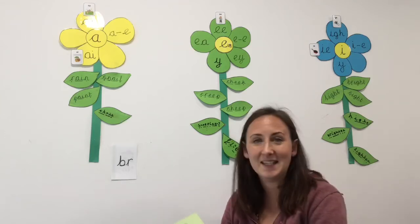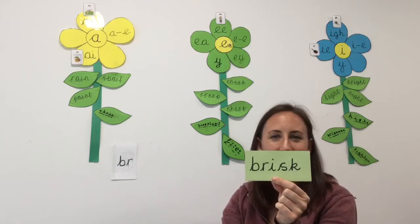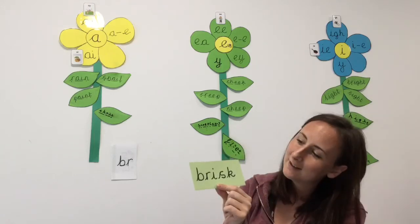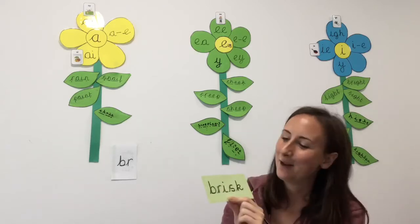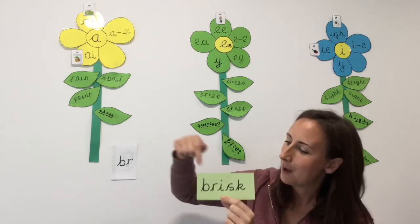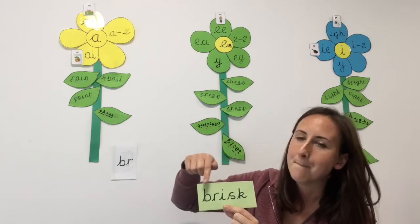Now my next word is this. Can you see any digraphs or trigraphs? No, not in this word. Now let's sound it out together. B-R-I-S-K. Brisk. My turn brisk, your turn.